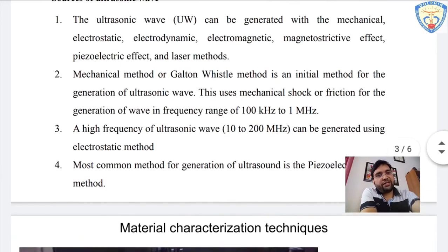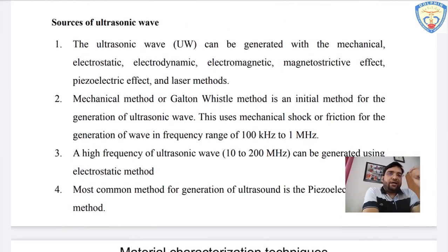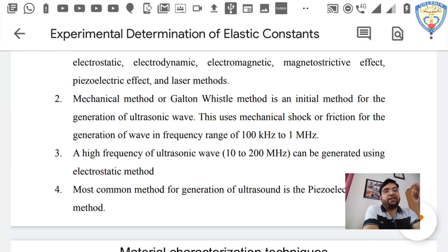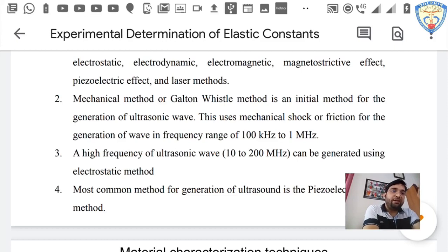The most common method to generate ultrasonic waves is the piezoelectric method. In piezoelectric effects, when we apply stress it converts into electrical signals — as seen in a gas lighter, where pressing the button supplies charges. However, for producing ultrasonic waves we use the reverse piezoelectric effect: we apply electrical signals, which then produce stress waves. So we apply the reverse piezoelectric method to generate ultrasonic waves.